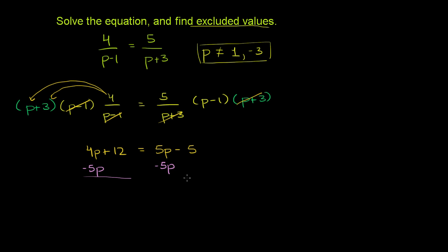And we get, on the left-hand side, 4p minus 5p is negative p plus 12 is equal to, these cancel out, is equal to negative 5.